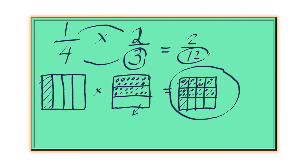It's 1, 2, 3, 4, 5, 6, 7, 8, 9, 10, 11, 12. So there are 12 total number of squares.